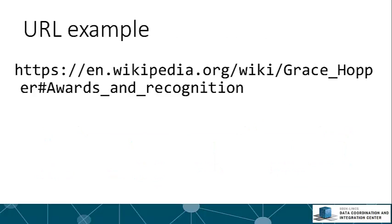Let's look at an example: a URL for the Wikipedia page for Grace Hopper. The scheme HTTPS specifies a secure connection. The authority, en.wikipedia.org, tells the browser where to make the connection — the English language version of Wikipedia. The path, /wiki/Grace_Hopper, specifies which resource to request from Wikipedia. And finally, the fragment, awards_and_recognition, further specifies where on the page to navigate. There's no query in this example.